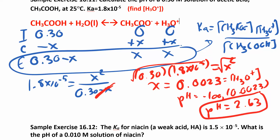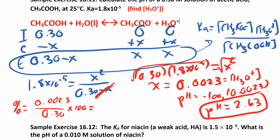Now let's check our approximation. Percent ionization equals 0.0023 divided by our initial concentration of 0.30, times 100, which gives 0.77%. That's really small — as long as it's less than 5%, the approximation is valid. So we can use it. The approximation is just getting rid of that x in the denominator when subtracting from the initial concentration.